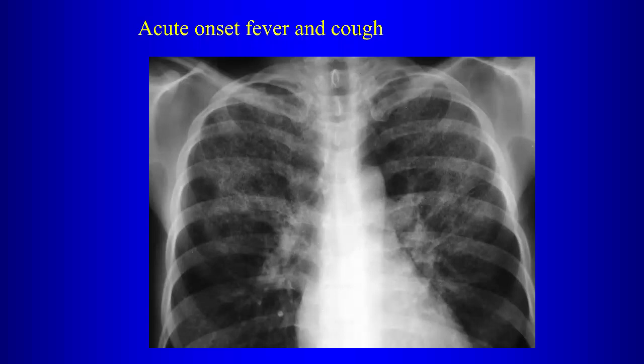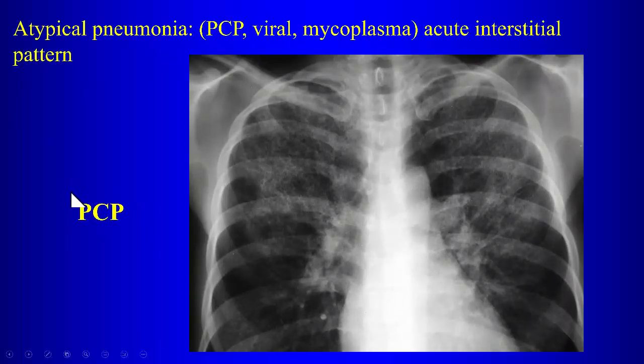For atypical pneumonia, the organisms we think about include viruses, Legionella — although Legionella more often gives consolidations — Mycoplasma, and Pneumocystis pneumonia. Pneumocystis may not be the first thing you consider; the patient may not be known to be HIV positive. This case was actually Pneumocystis pneumonia, giving an acute interstitial pattern and ground glass on chest x-ray.